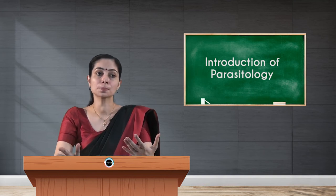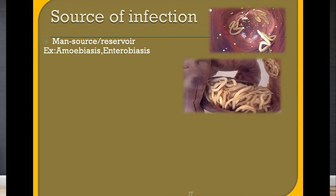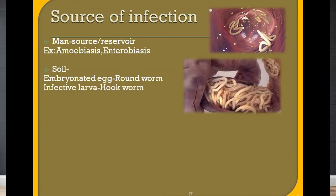An important topic is the different sources of infection. The first source is man himself. In many parasitic infections, man can become the source or reservoir where the parasite can be detected. Examples include amoebiasis caused by Entamoeba histolytica, and enterobiasis caused by Enterobius vermicularis — infections you get from an infected human being.